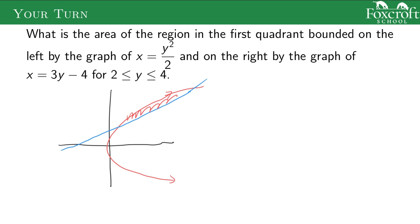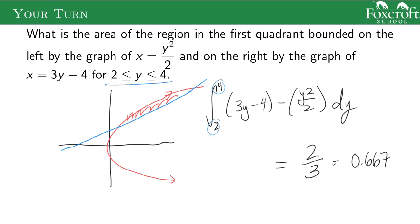So go ahead and write your integral and figure out what that area is going to be. And the answer you should get is two-thirds or 0.667. So you take the integral from where you start to where you finish. The right function is the line, the left function is the parabola.